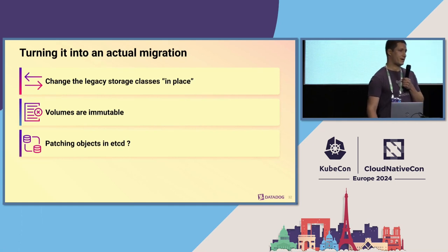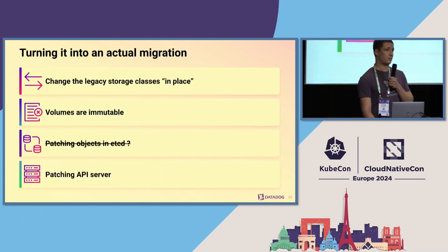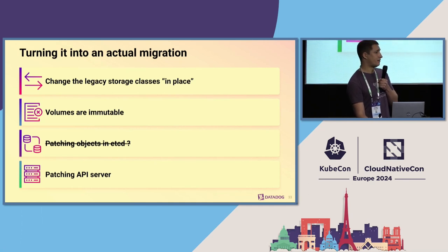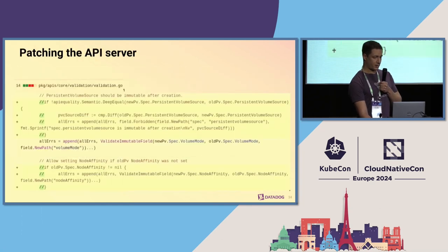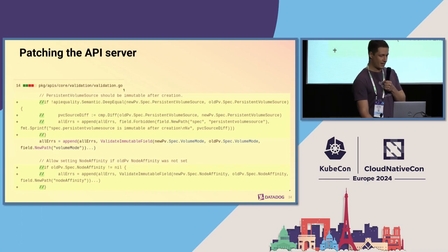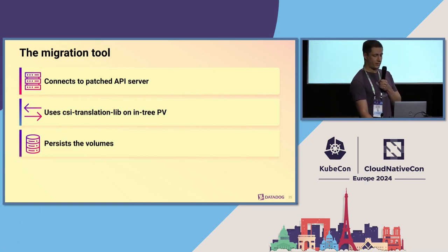Our first idea was to patch the objects directly in the etcd backing store, but that felt very hacky and we were unsure about possible race conditions and interactions with the various Kubernetes component caches. Instead, we decided to patch the API server to allow the modification at the API server level, so the operation would be like any other update — with all the necessary checks to avoid race conditions. The patch itself is very small — essentially just commenting out seven lines of code, removing the immutability equality check. With that, our migration tool was straightforward: connect to the patched API server, loop over all in-tree volumes, use the translation library to convert them to CSI, and patch the changes.